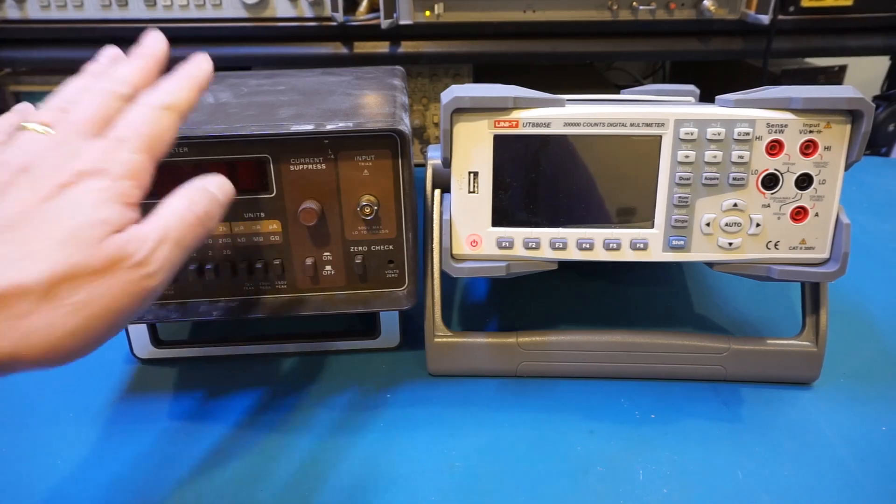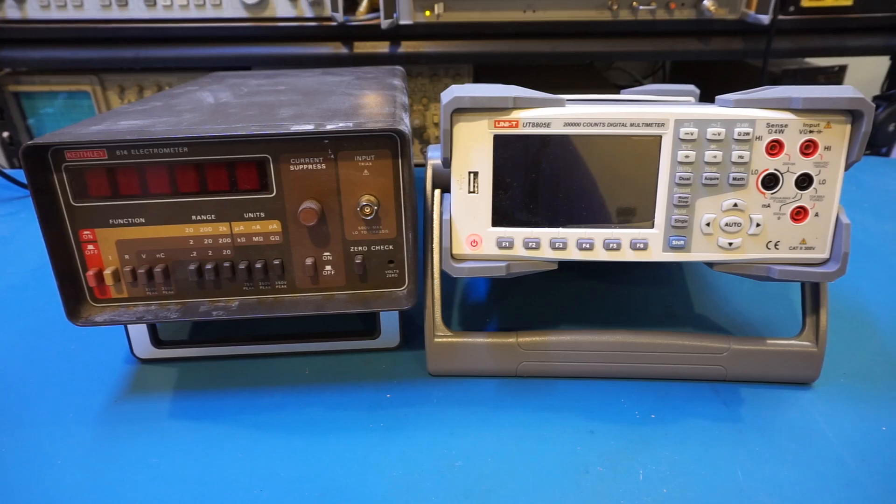The Keithley 614 electrometer can measure current down to the picoamp range with a resolution of 10 femtoamps, and it can also measure resistance up to 200 gigaohms. I haven't had the need to use this meter lately, so this just gives me an excuse to fire it up.